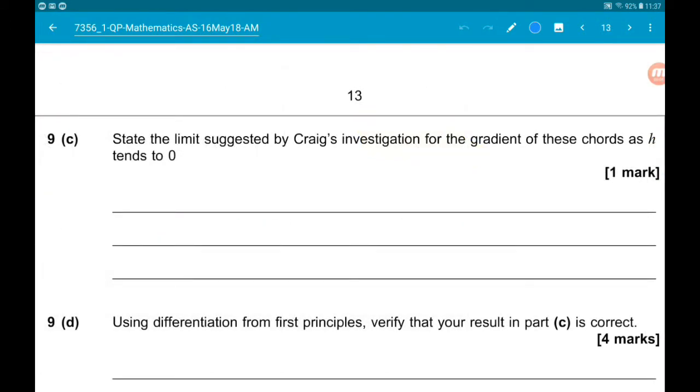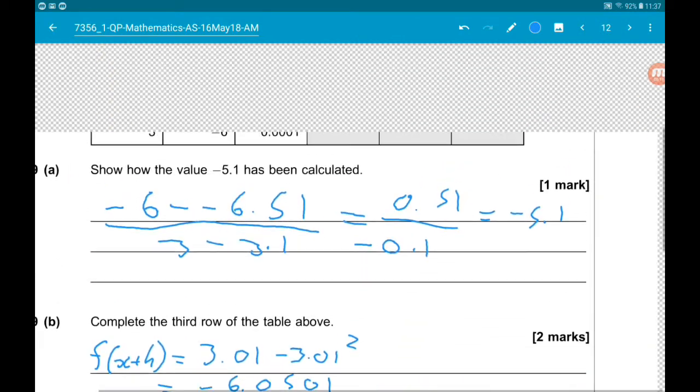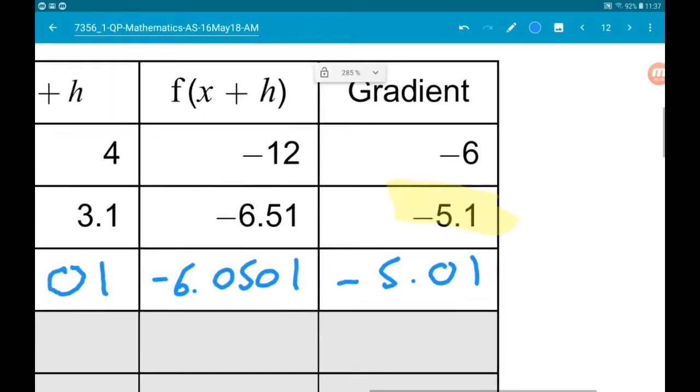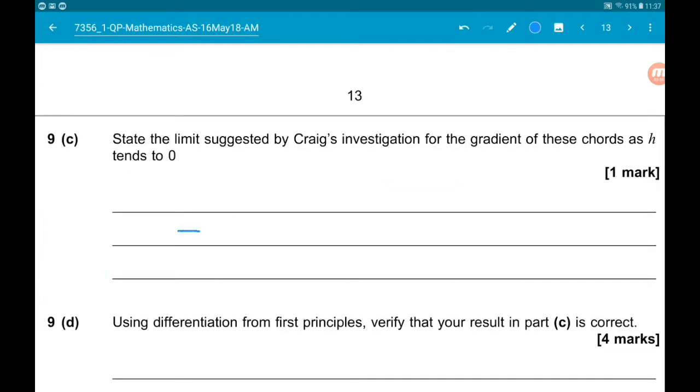Part C asks us to state the limit suggested by Craig's investigation for the gradient of chords as h tends to 0. Looking at the table, the gradient as h is increasing has gone from -6 to -5.1 to -5.01, so it seems to be tending towards -5.